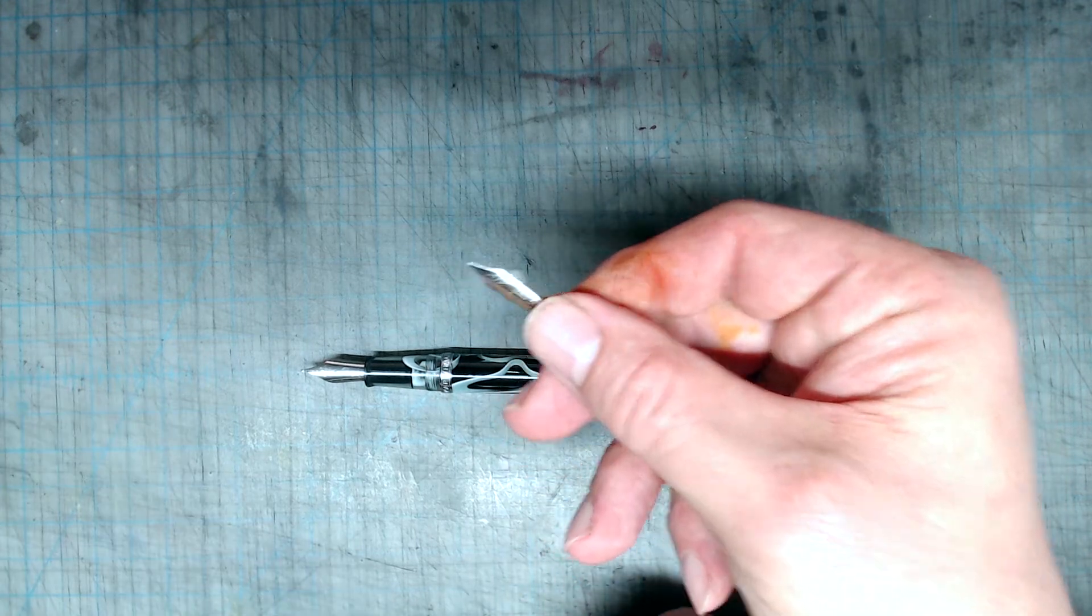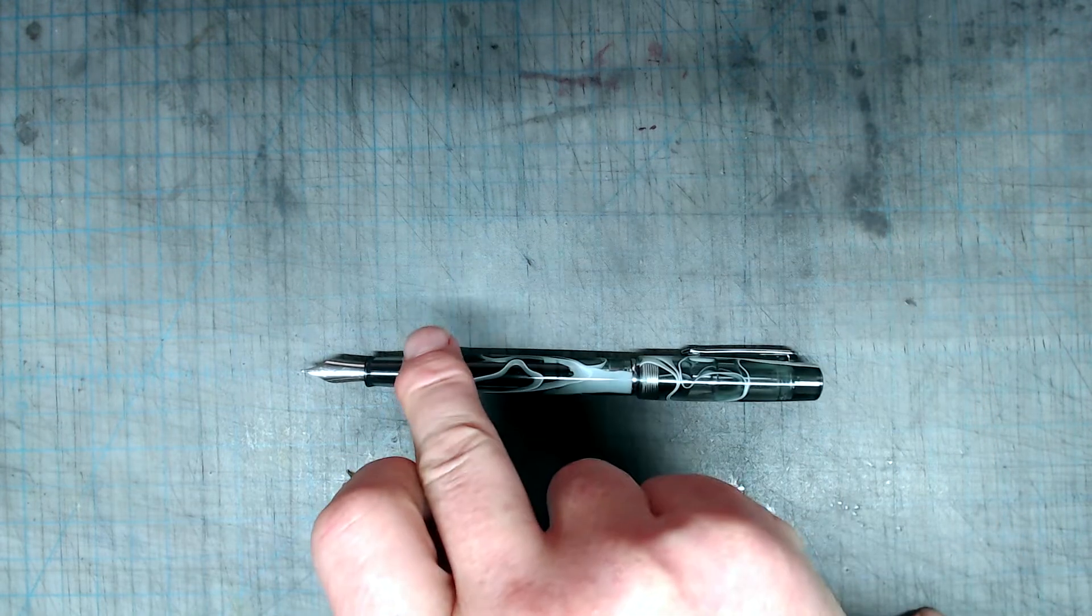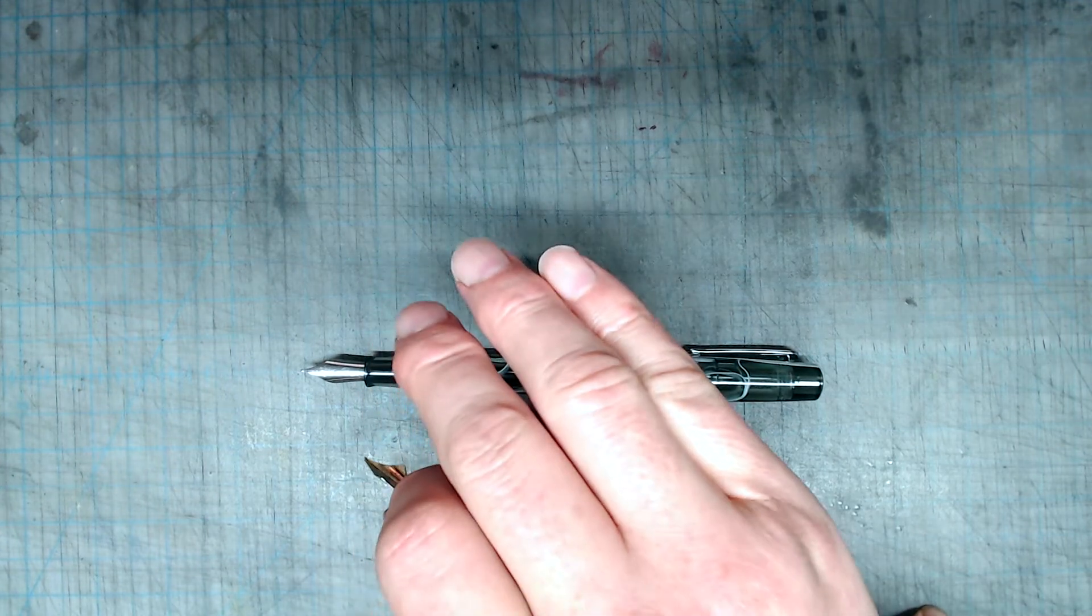Unfortunately, even though the FPR number 6 UltraFlex nibs will fit into this nib unit, the plastic feed doesn't keep up and the pen will railroad.